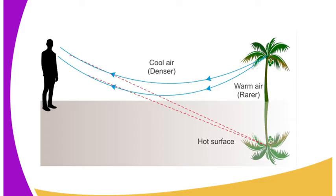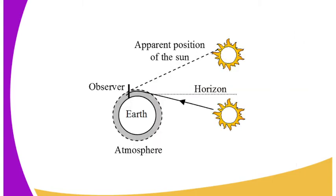Mirages are also witnessed in cold regions, but this time the light curves in opposite direction to one in hot areas. The mirage gives us an optical illusion of an inverted image in a pool of water.